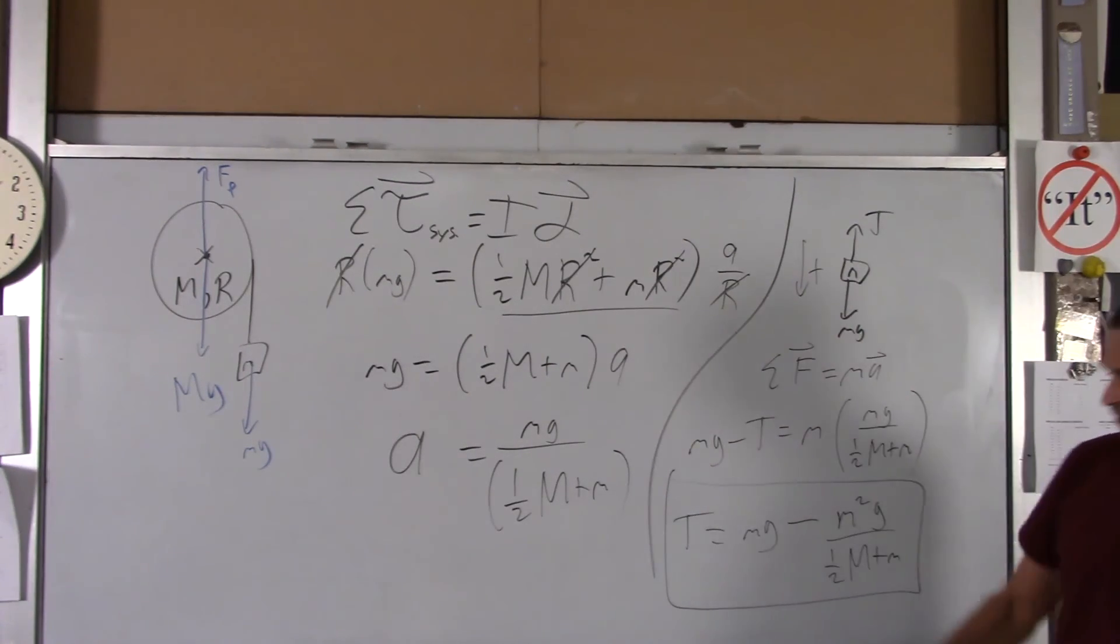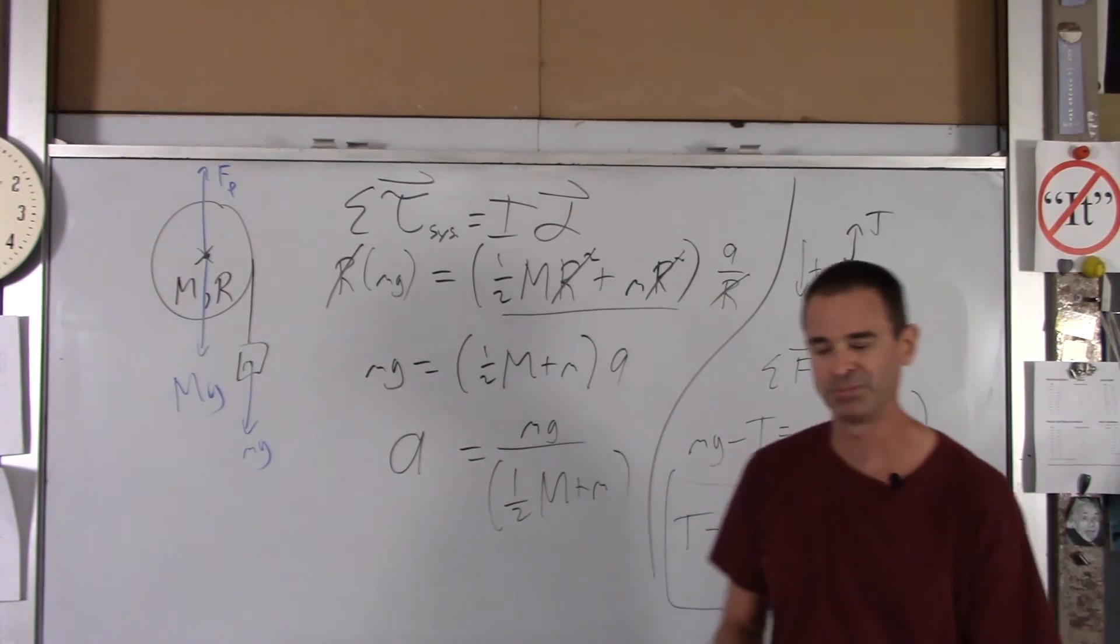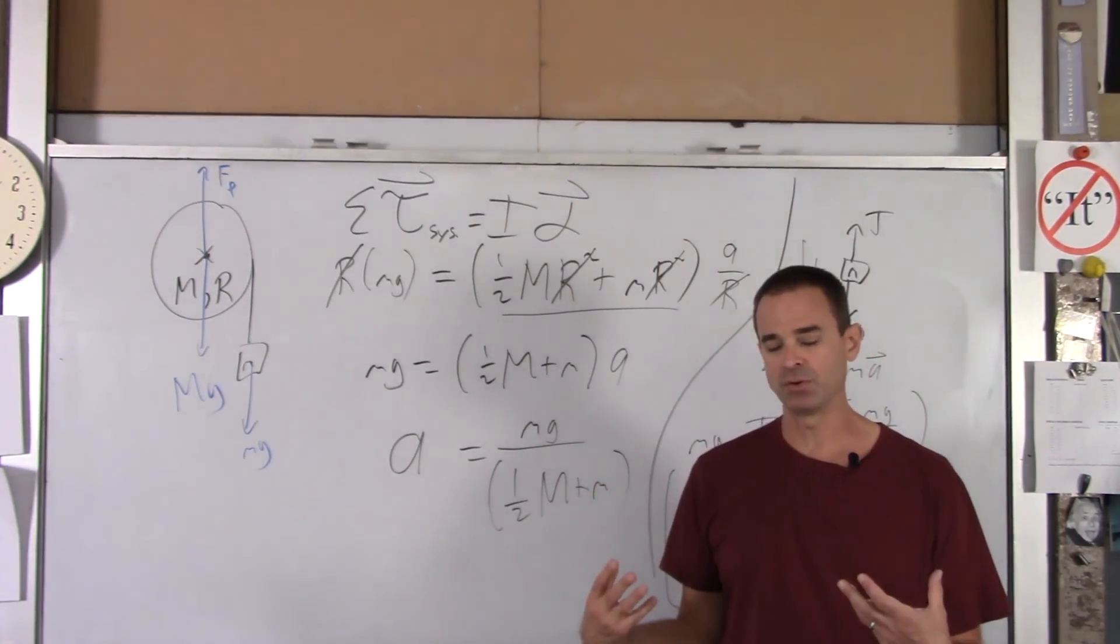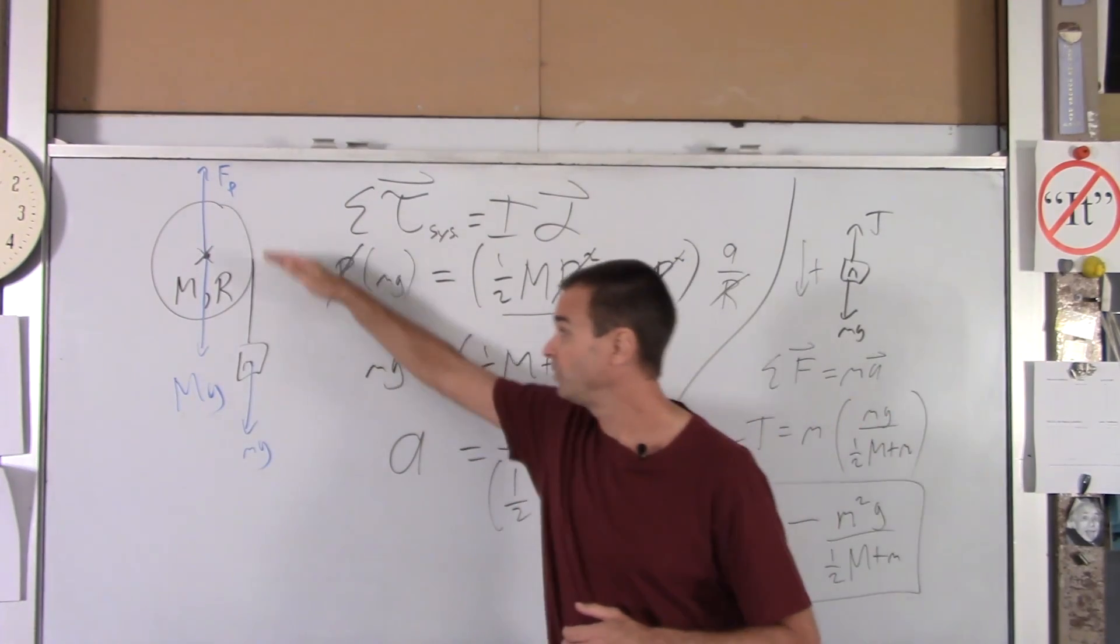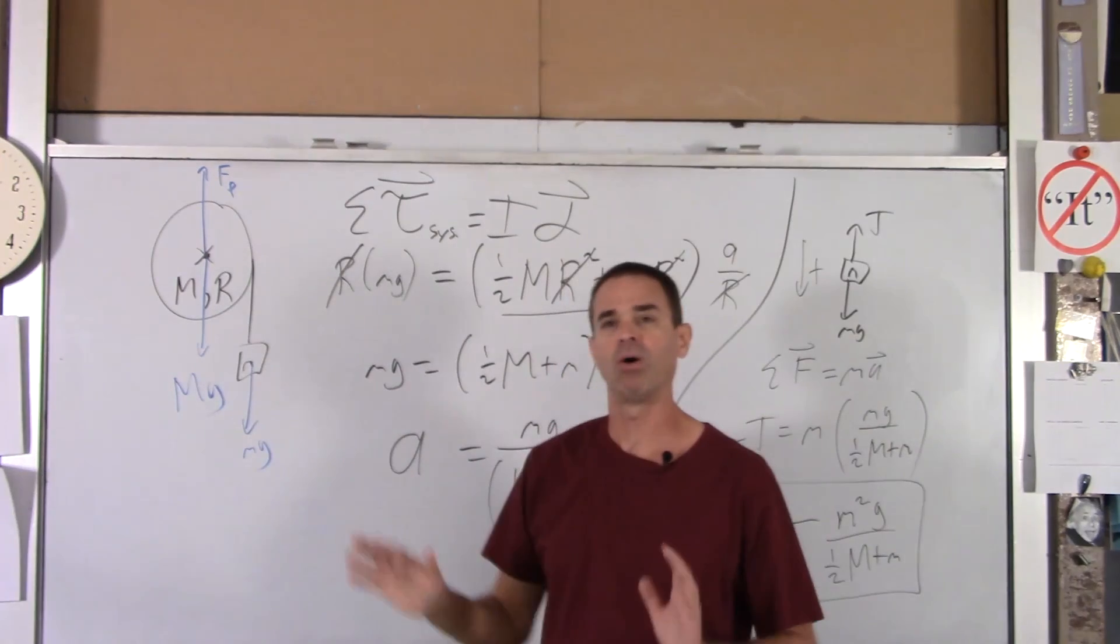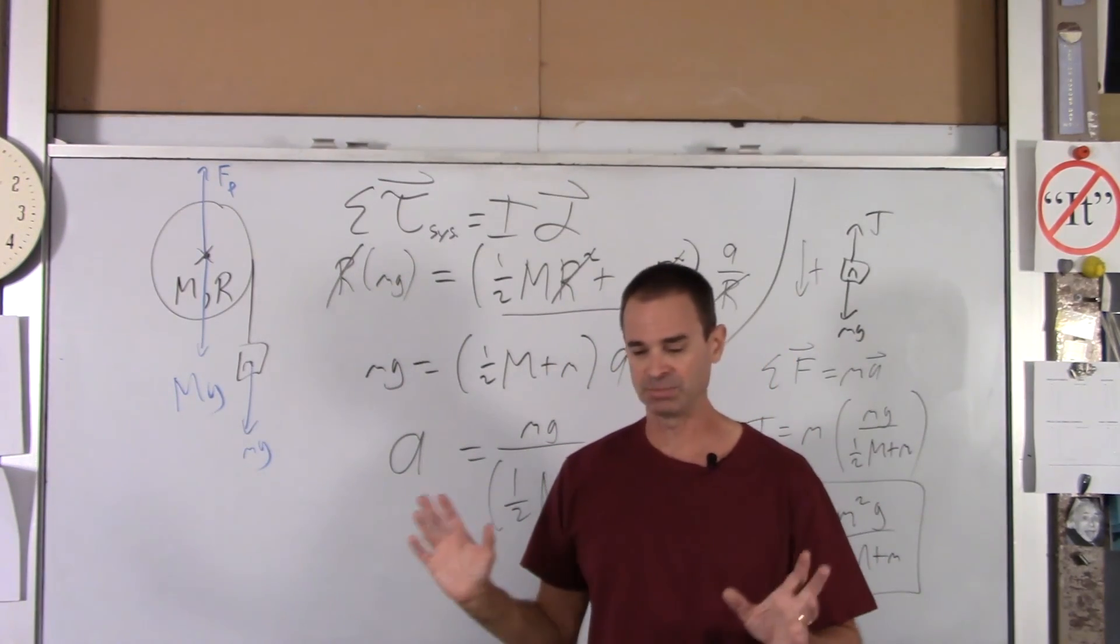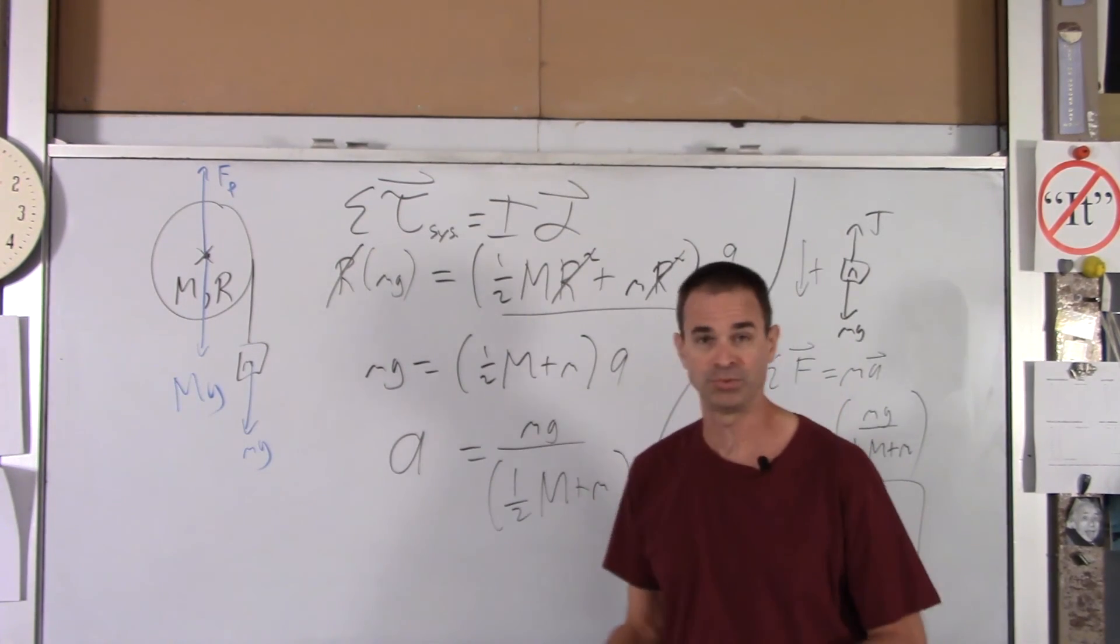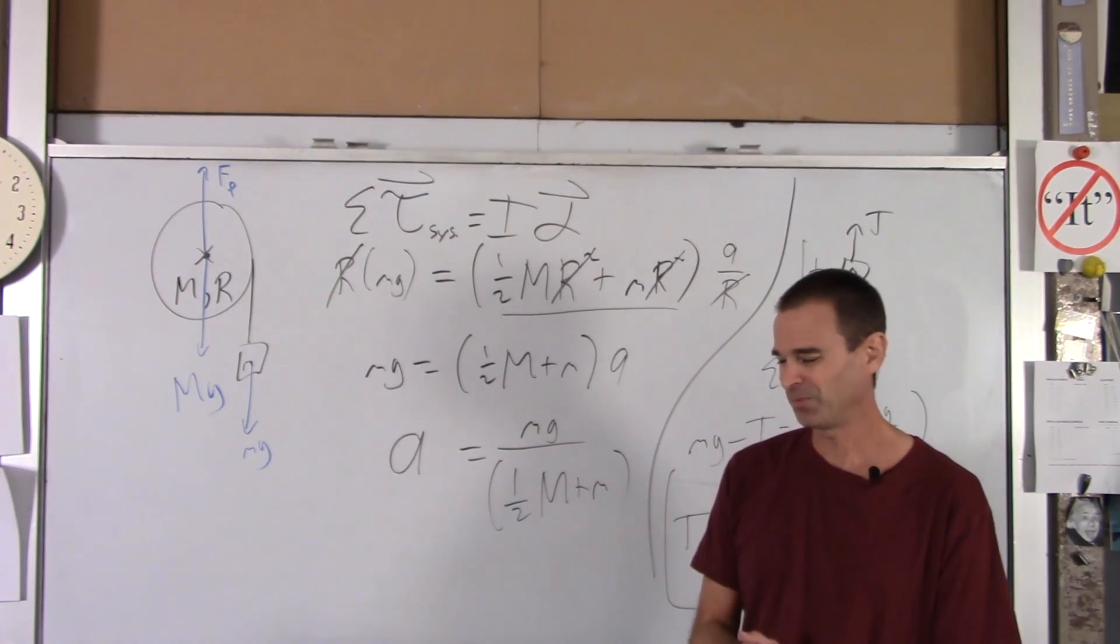So there you go. That's a quick way to find tension in the string. And then, of course, if we gave you numbers, you'd be able to solve them. So again, any problem that we give you, you can do these individually. You can do Newton's Second Law individually on each piece, and that will always work. But there are many cases where looking at the system as a whole is beneficial and sometimes very easy to do.